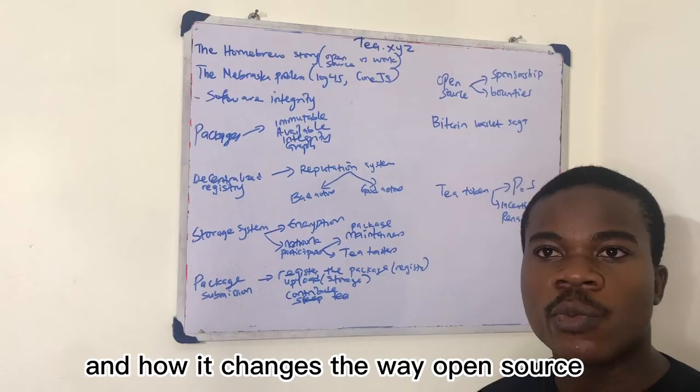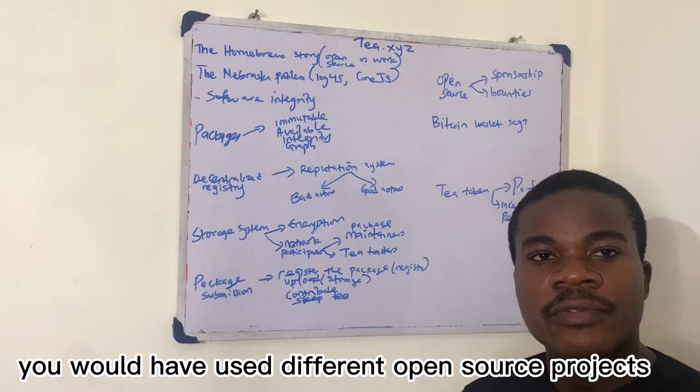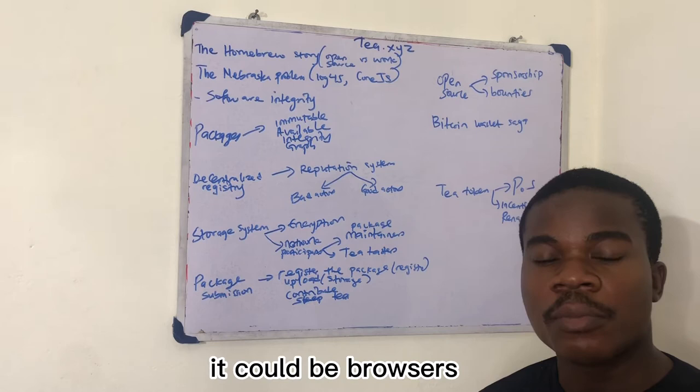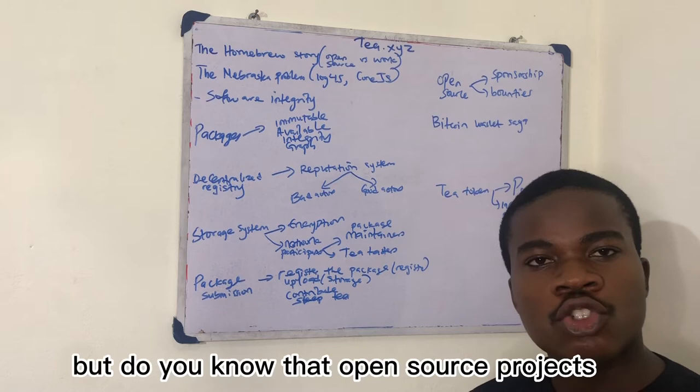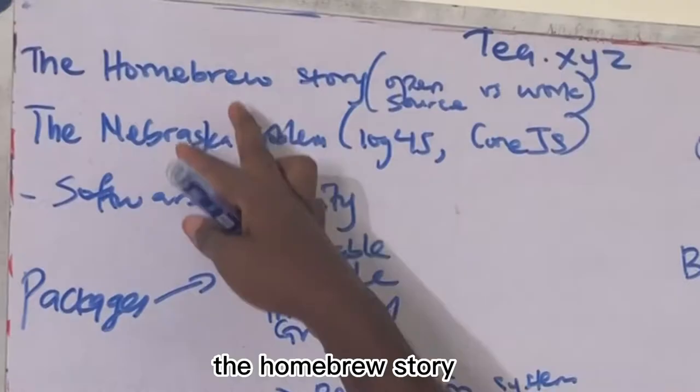Okay, in today's video we will be talking about the TID project and how it changes the way open source projects have been developed. As a viewer, you would have used different open source projects, either as a developer or as an ordinary end user. It could be browsers, video players, or many things. But do you know that open source projects are not often compensated, and that is a very big problem.